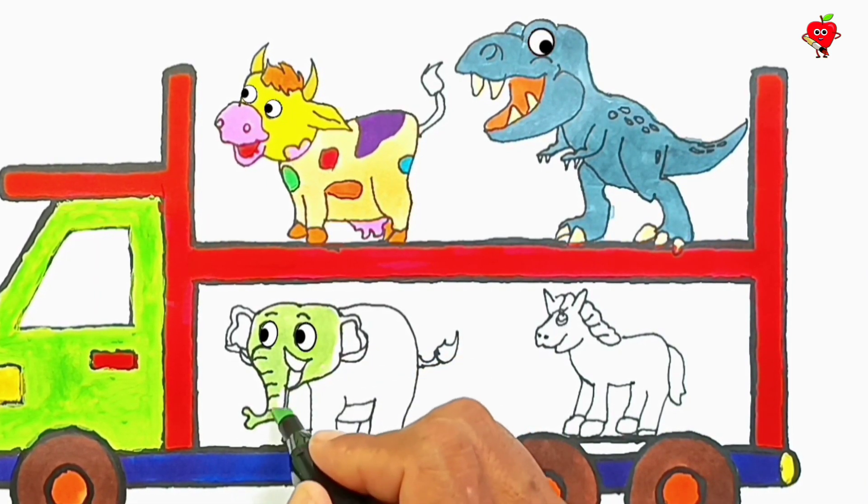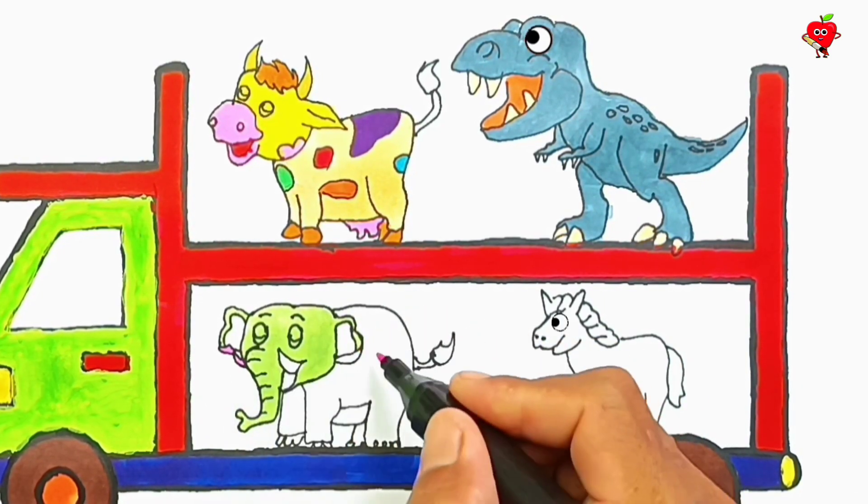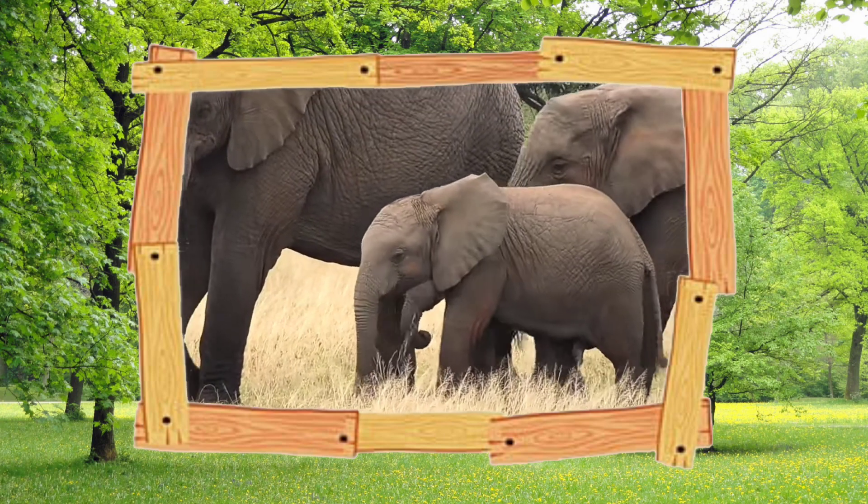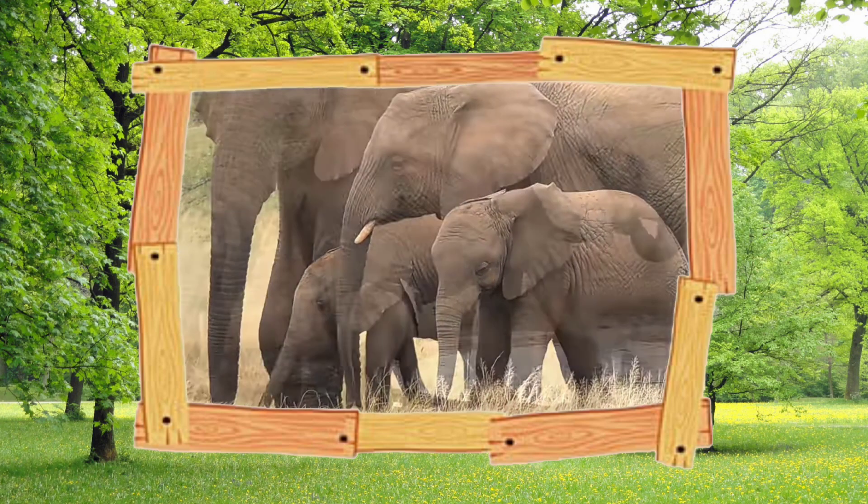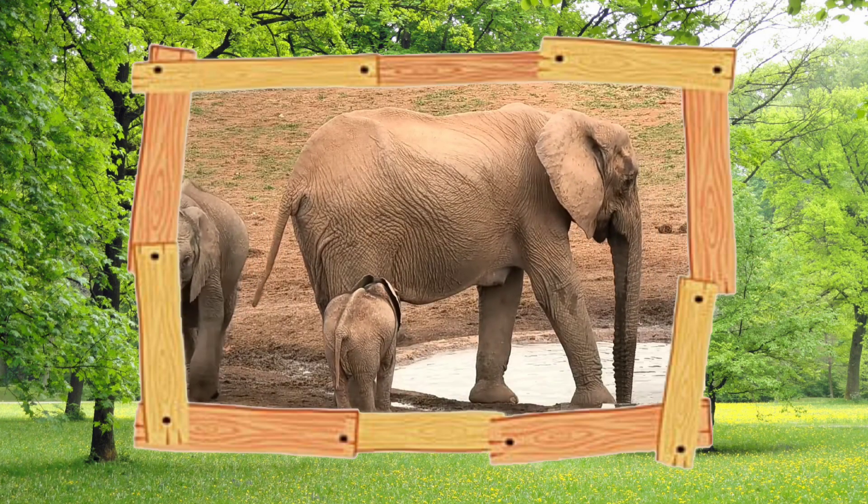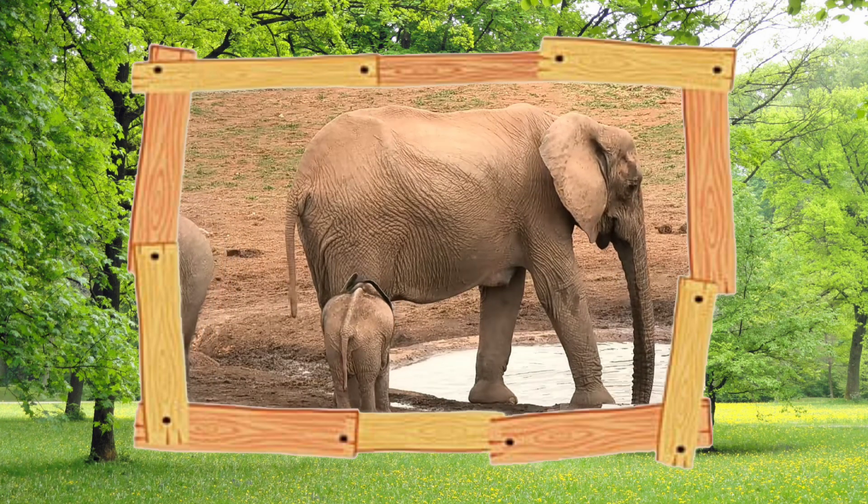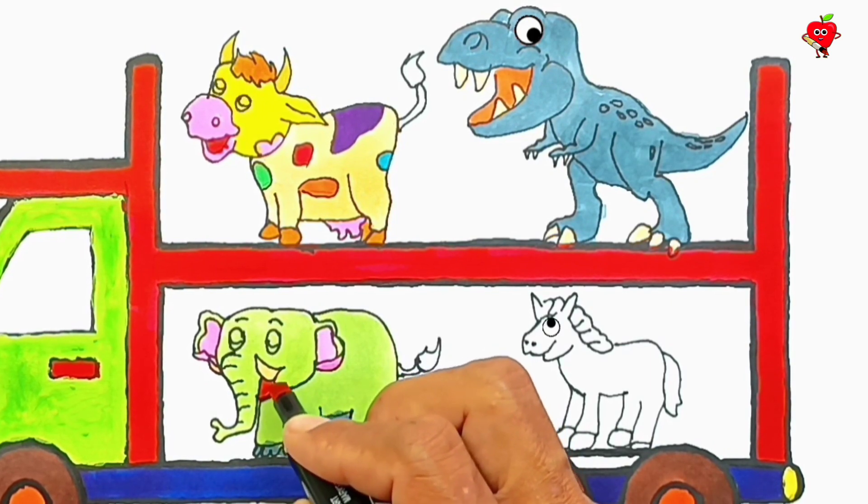Next, color the cute African elephant with white and green. Elephants are group animals that eat plants and small animals. He is a docile animal but can throw tantrums when they are threatened. Okay, we finished all.